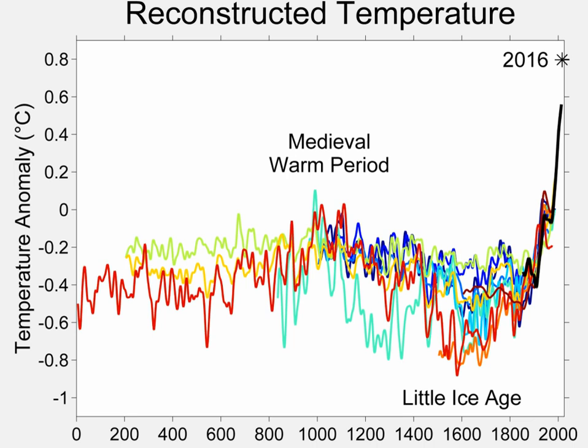Large-scale reconstructions covering part or all of the first and second millennium have shown that recent temperatures are exceptional. The Intergovernmental Panel on Climate Change Fourth Assessment Report of 2007 concluded that average northern hemisphere temperatures during the second half of the 20th century were very likely higher than during any other 50-year period in the last 500 years and likely the highest in at least the past 1,300 years.